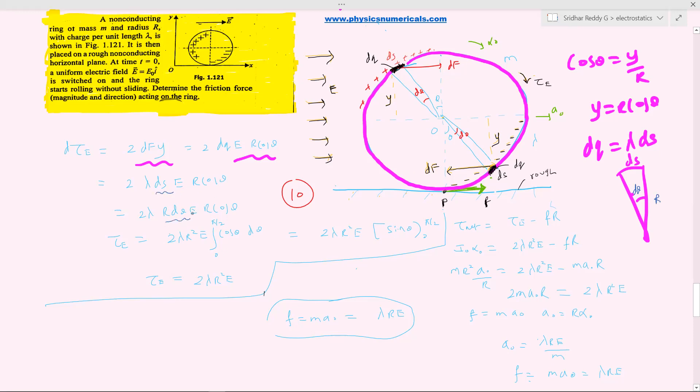So here, in place of ds, what will write? r d theta. So therefore, the torque, electrostatic force about point O, center of the ring. Further, two lambda r square e cos theta d theta. Where the charge is present? The charge is present from here to here, zero to pi by two. The charge is present in the from zero to pi by two. So the limit will be zero to pi by two integral of cos theta. Sine theta upper limit pi by two and lower limit zero sine pi by two will be one. So substituting that I'll end up torque due to electrostatic force in the direction clockwise.